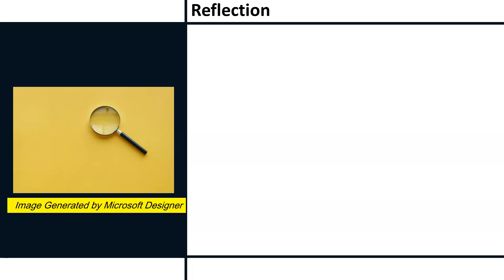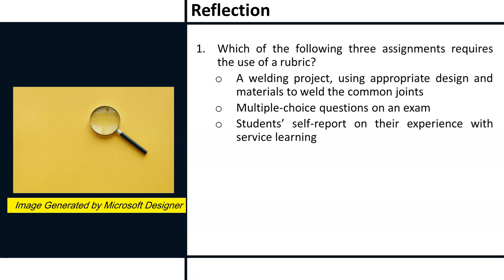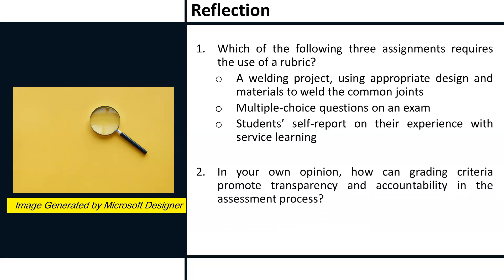Now, what questions should we start asking ourselves? 1. Which of the following three assignments requires the use of a rubric? A. A welding project using appropriate design and materials to weld the common joints. B. Multiple choice questions on an exam. C. Students' self-report on their experience with service learning. 2. In your own opinion, how can grading criteria promote transparency and accountability in the assessment process? Reflect in writing on these two questions using the Gibbs Reflective Cycle Guide. Compile your reflection in the e-journal available within the e-learning platform and share your reflections with colleagues and on the Community of Practice platform.